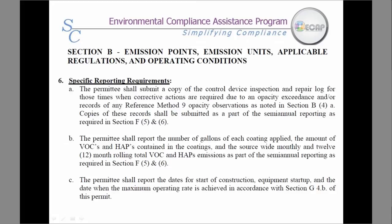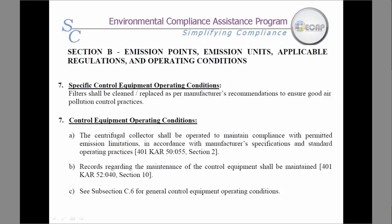The same theory applies with reporting requirements — remember, if you are required to monitor it, then record it and report it. Section 7 covers the control equipment requirements. Also keep records of any maintenance, for example, when you change out your filters.